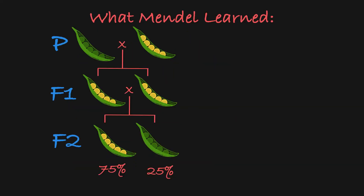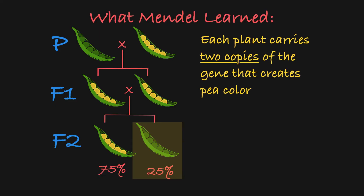The reappearance of green peas in this F2 generation told Gregor Mendel three things. First, each plant carries two copies of a gene that creates pea color. He knew this because these F2 green pea plants must have gotten their traits from their parents, all of which have yellow peas.